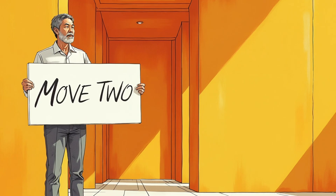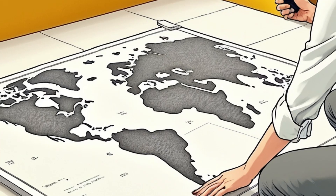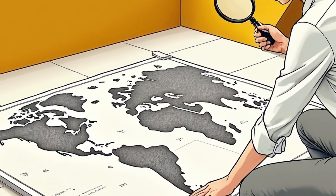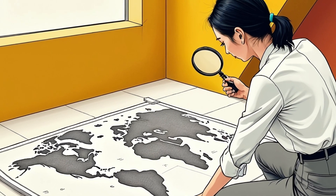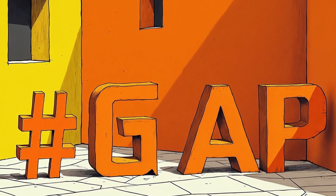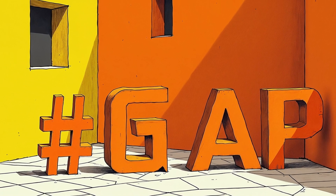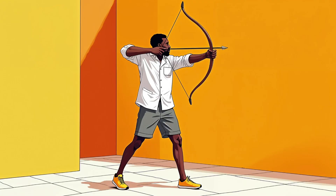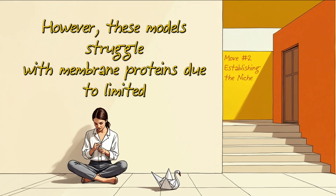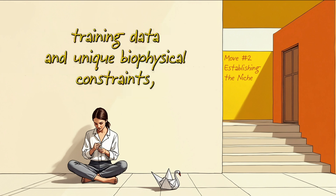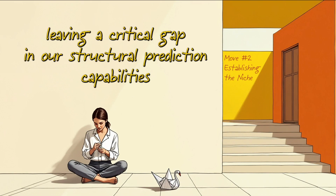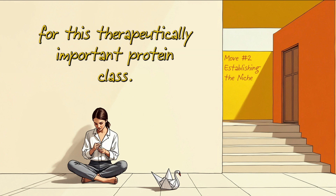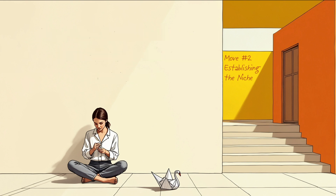Move 2: Establishing a Niche. After mapping the territory, we next identify a gap, limitation, or problem in existing research. This might be a contradiction in findings, an unexplored area, or methodological limitations. This creates tension that your research will resolve. For example: However, these models struggle with membrane proteins due to limited training data and unique biophysical constraints, leaving a critical gap in our structural prediction capabilities for this therapeutically important protein class.